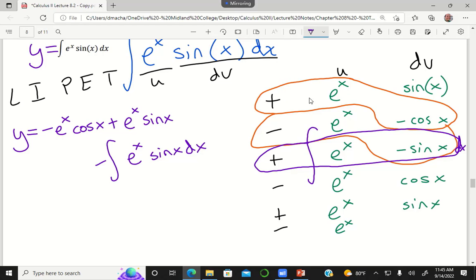And so I can rewrite this equation as y equals negative e to the x cosine x plus e to the x sine x minus y. Okay.